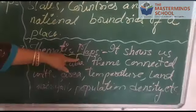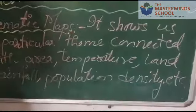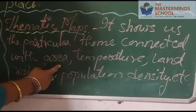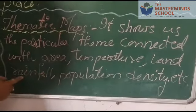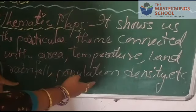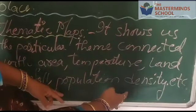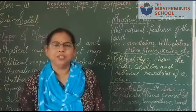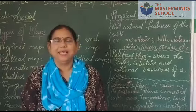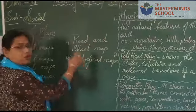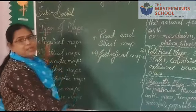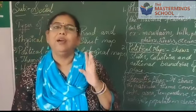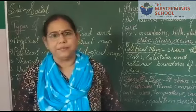Next, the thematic maps. A thematic map shows us a particular theme connected with an area — for example, temperature, land, rainfall, population, and density. There is also a book called Atlas. In that Atlas we will get all these maps. An Atlas is a book with many types of maps.